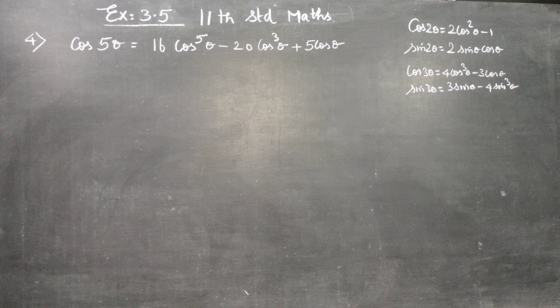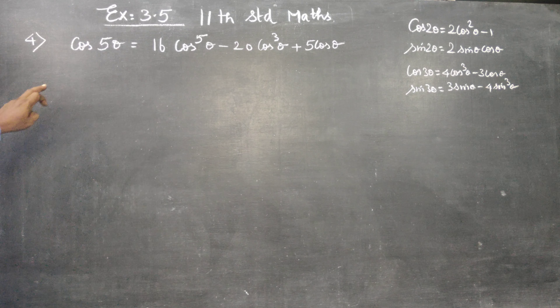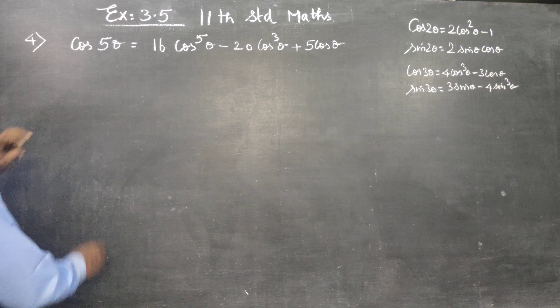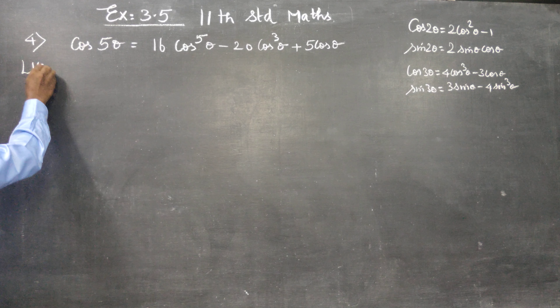cos3θ = 4cos³θ - 3cosθ. sin3θ = 3sinθ - 4sin³θ. You must be very familiar with these formulas — cos2θ, sin2θ, cos3θ, sin3θ. Coming back to our problem, we will start with the LHS which is cos5θ.